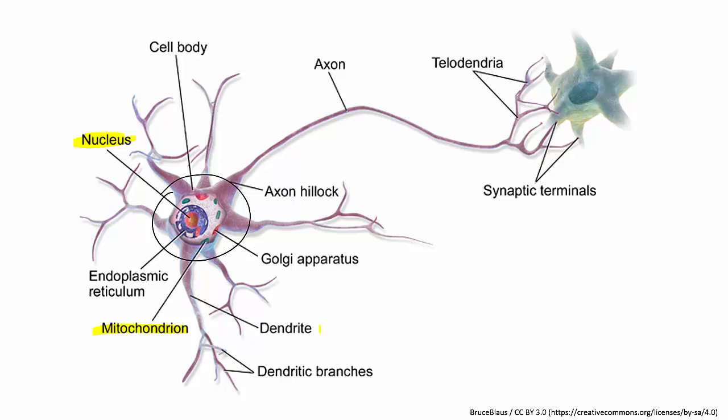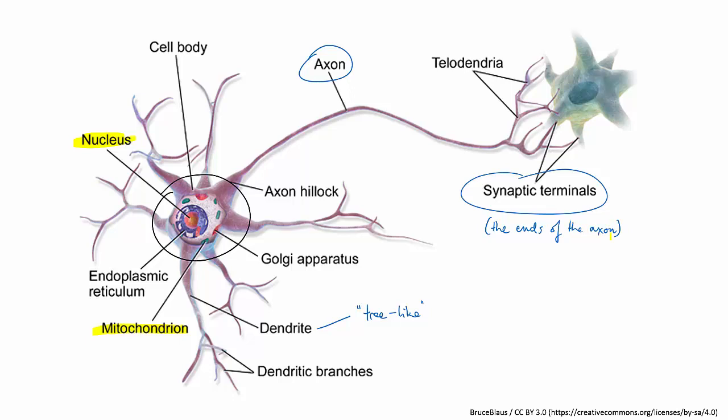But from the cell body protrude a number of thin branches known as dendrites. The word dendrite means tree-like. Also extending from the cell body is a long thin tube known as the axon, which ends in more branches called axon terminals or synaptic terminals.